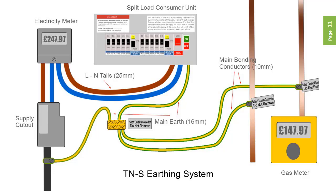Care should be taken that the earth conductor is the correct size and is securely fixed. If not, the supply authorities should be contacted, as this is their responsibility and property. A TNS system has a maximum earth fault loop impedance, or ZE, of 0.8 ohms.